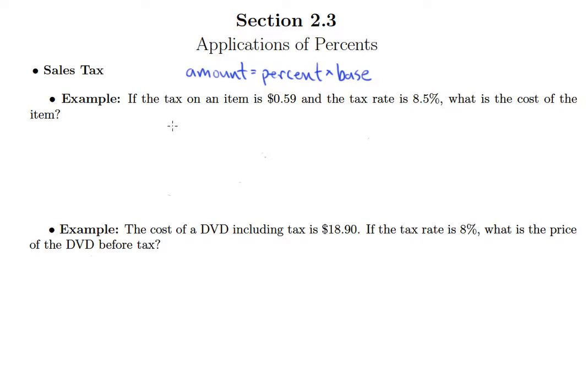As I set this up I understand that I will have amount equals percent times base is my X value. I'm gonna go ahead and put X here first. 59 cents, that's the only other non-percent number I'm given, so that's got to be the amount, and of course 59 cents is the amount of tax so that makes sense.